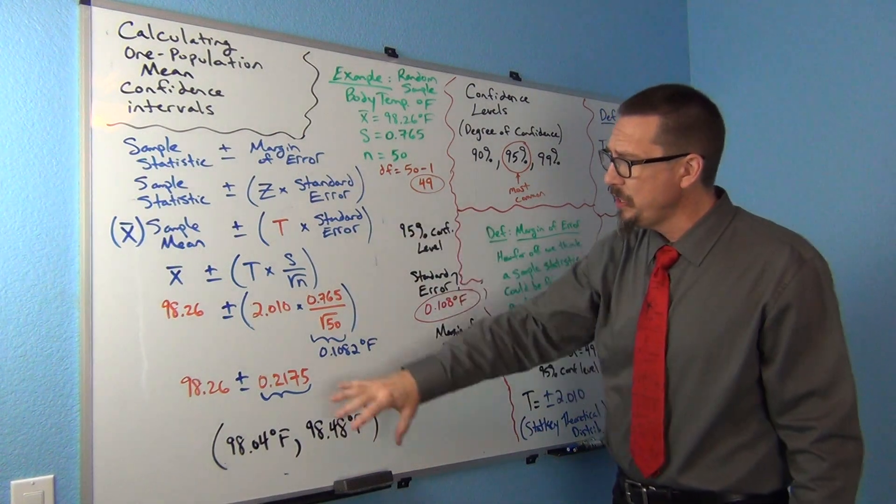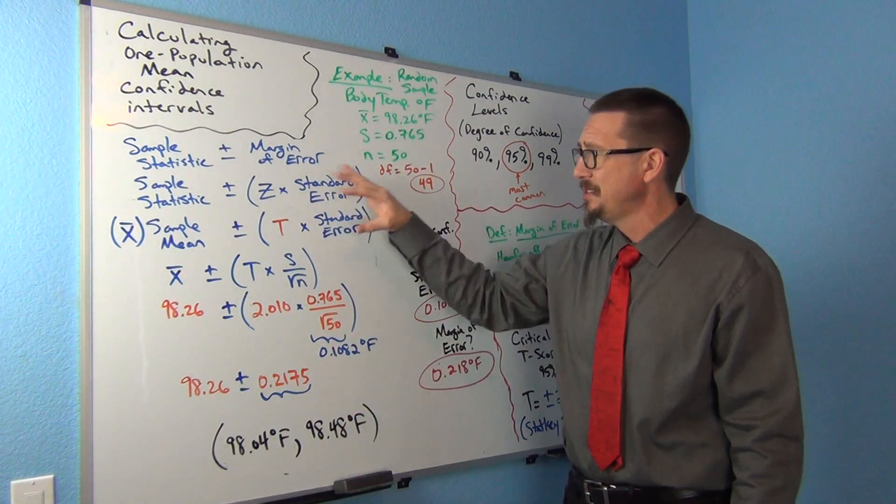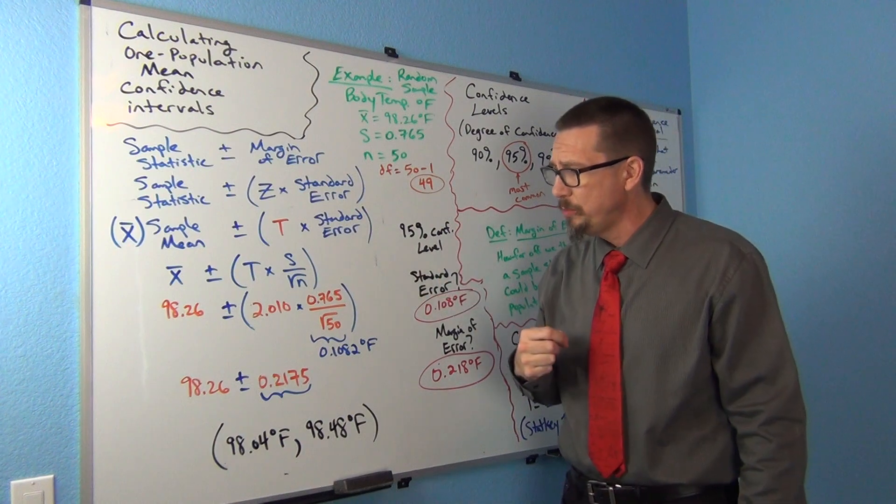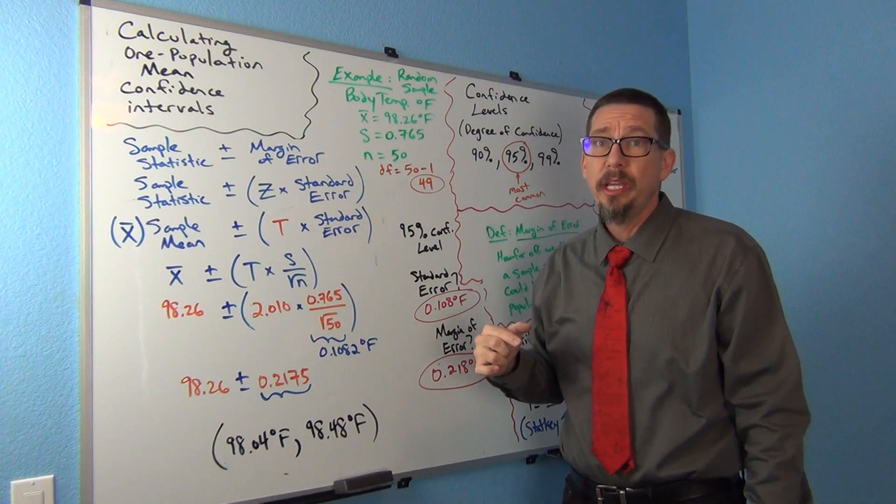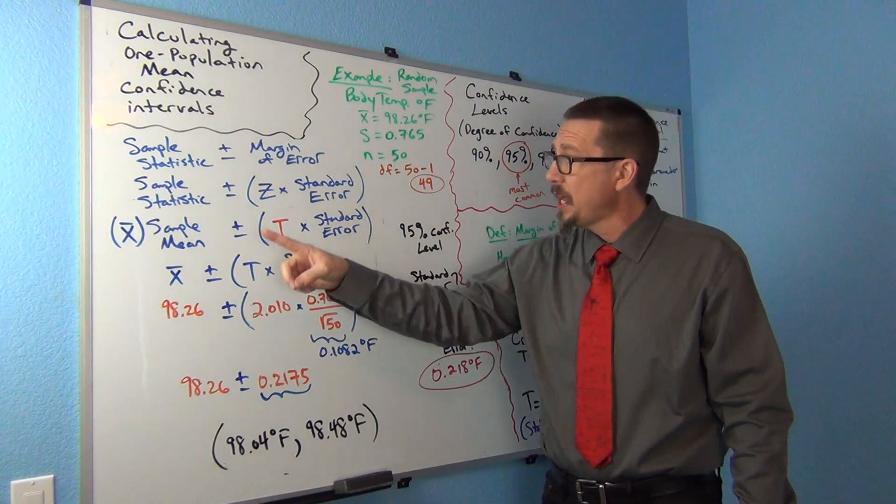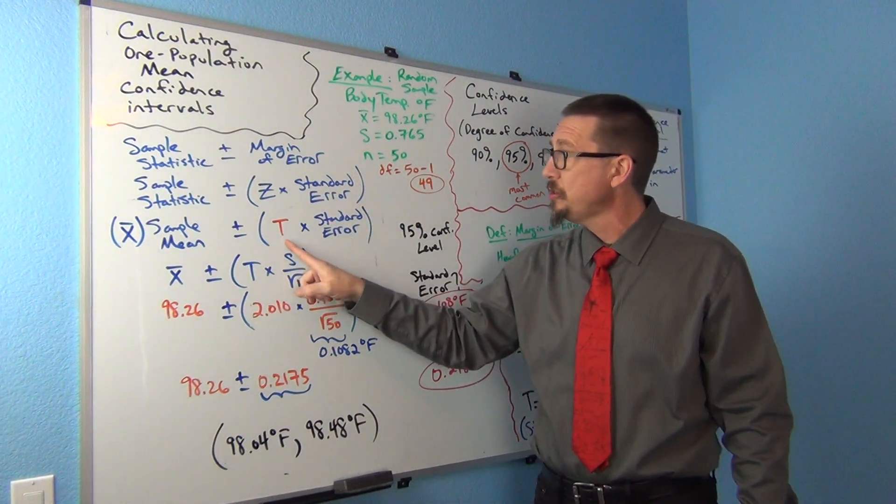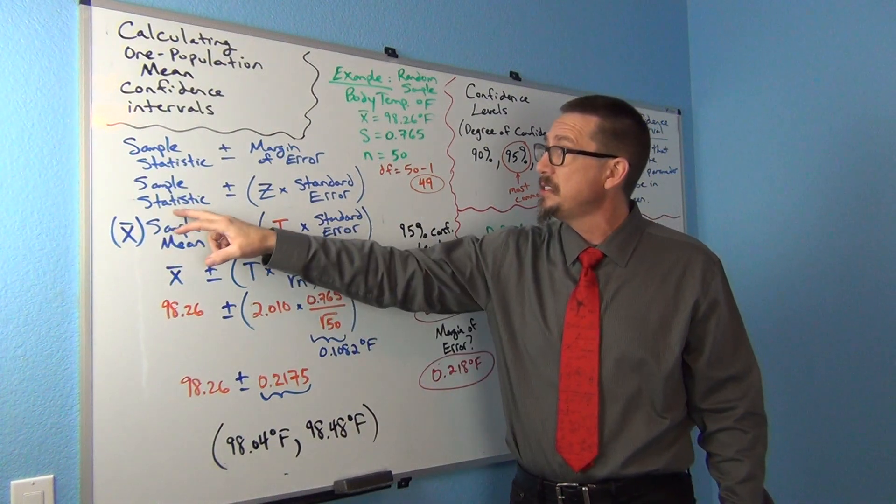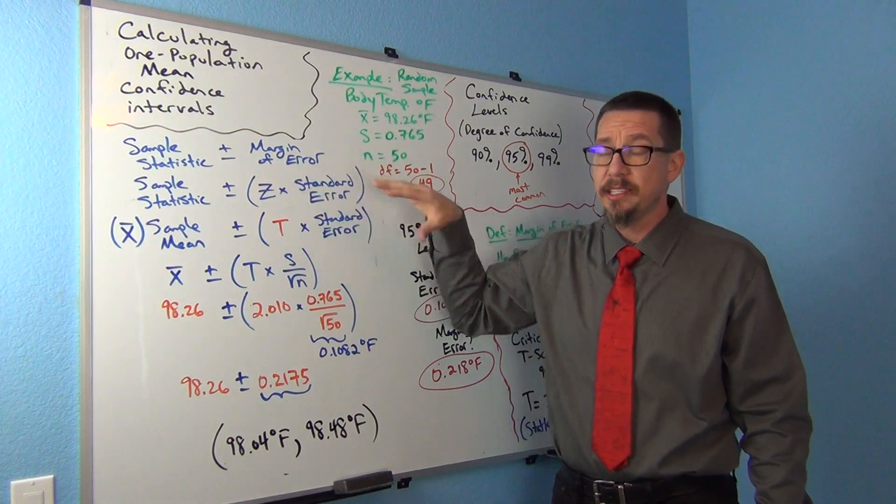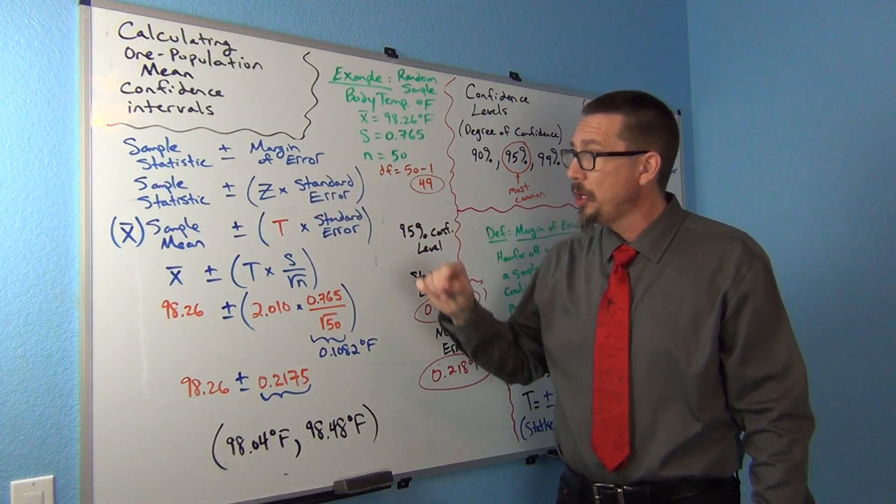Like anything, the computer is going to calculate this. When you go to a traditional computer program and click one population mean confidence interval, it's going to calculate this stuff for you. The key is knowing the idea - it's the critical value times the standard error gives you the margin of error. Then it's taking the sample statistic and adding and subtracting the margin of error is how you get the confidence interval.